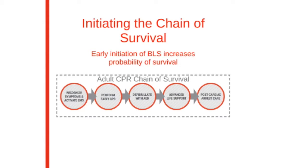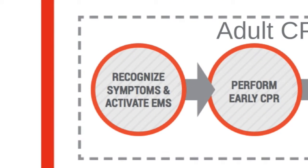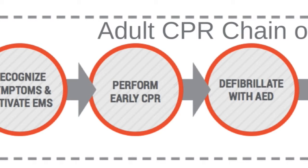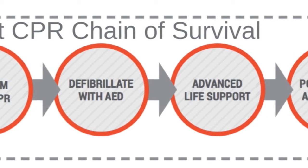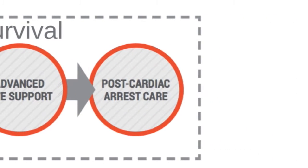Early initiation of BLS has been shown to increase the probability of survival for a victim of cardiac arrest. To increase the odds of surviving a cardiac arrest event, the rescuer should follow the steps in the adult chain of survival. The adult chain of survival involves recognizing the symptoms and activating EMS, performing early CPR, proper defibrillation with an AED, advancing life support, and performing proper post-cardiac arrest care.